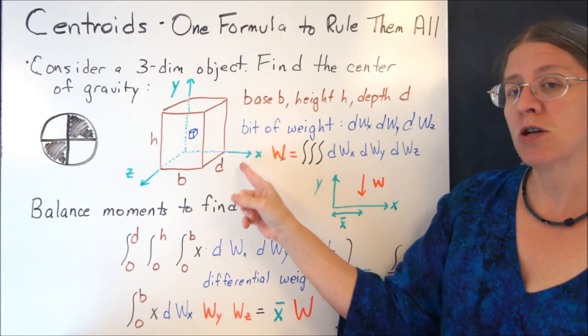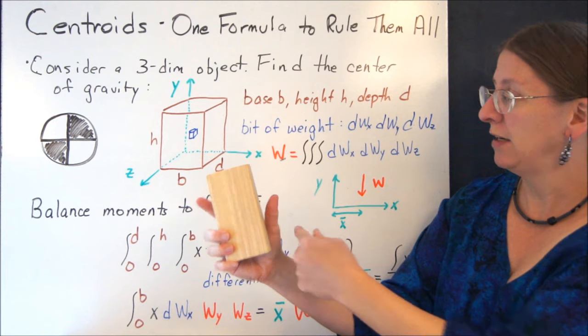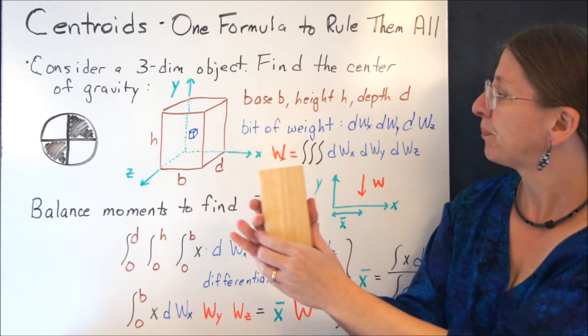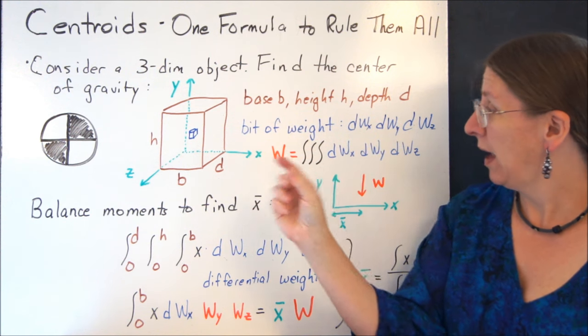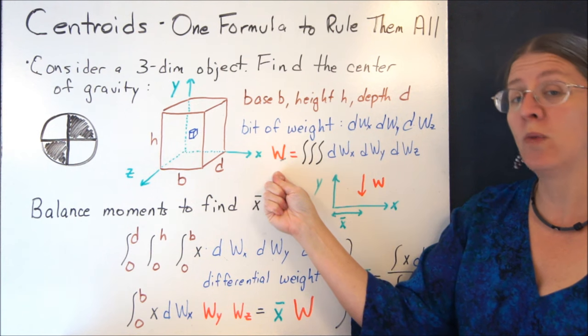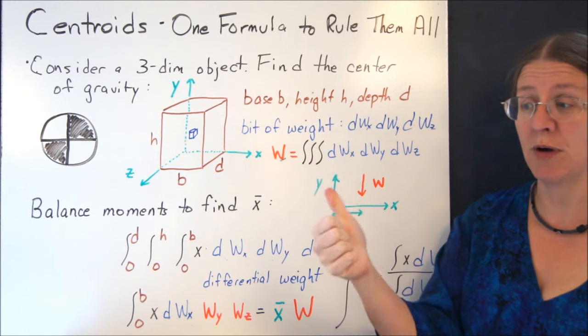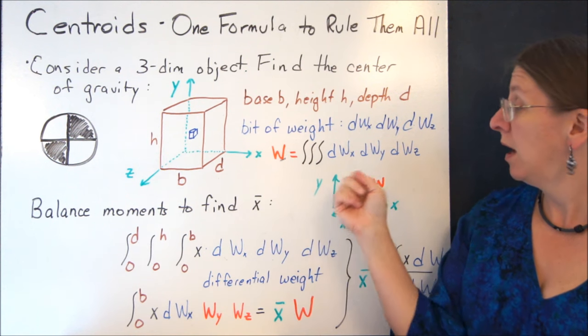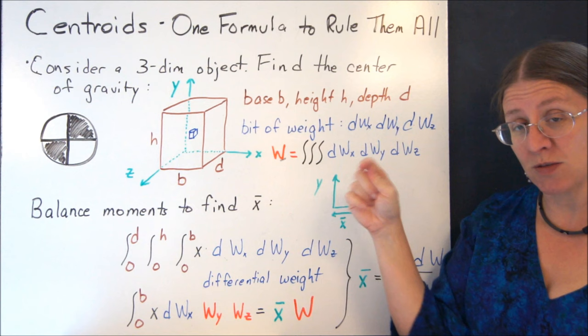I'm going to take my three-dimensional object and define some axes, so I've got some depth into the page and a base and a height. I could take a tiny bit of that weight and integrate it all the way through so that the total weight would be the triple integral of dWx, dWy, dWz. Each of these is a differential bit of weight in the x, y, and z directions.